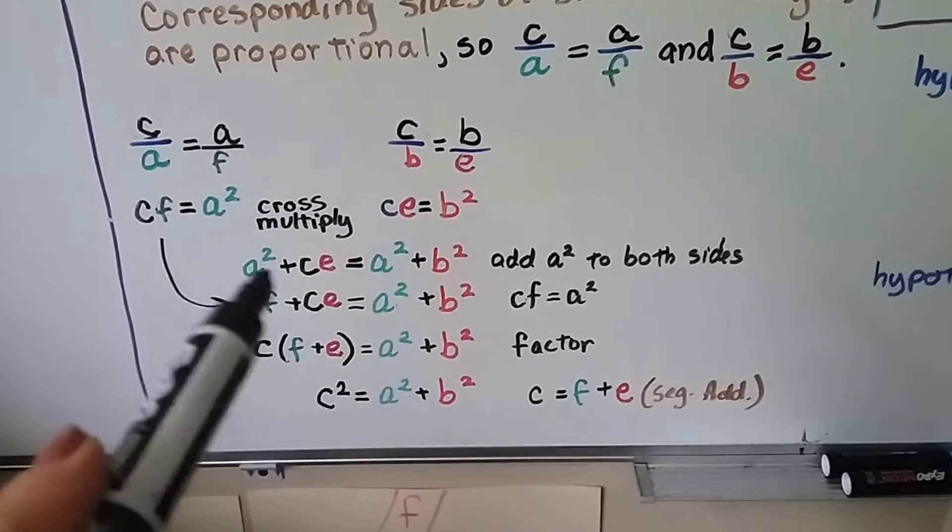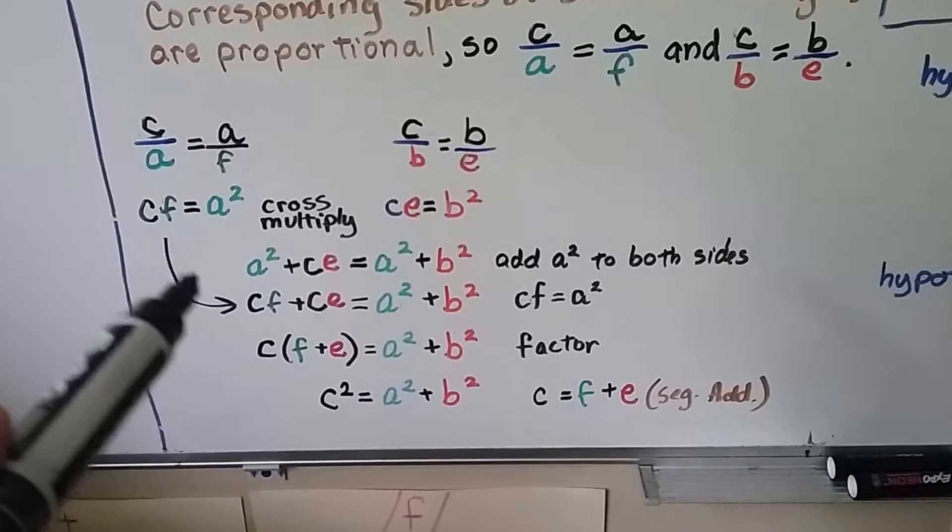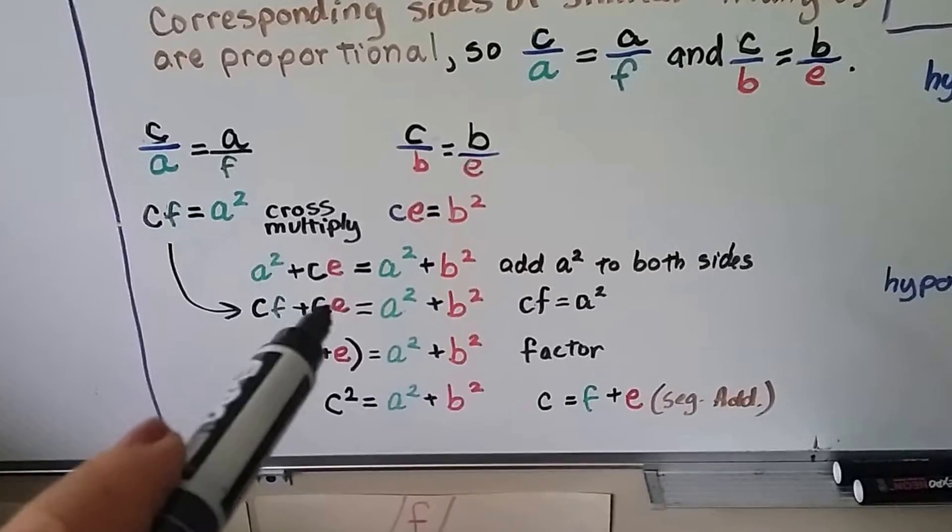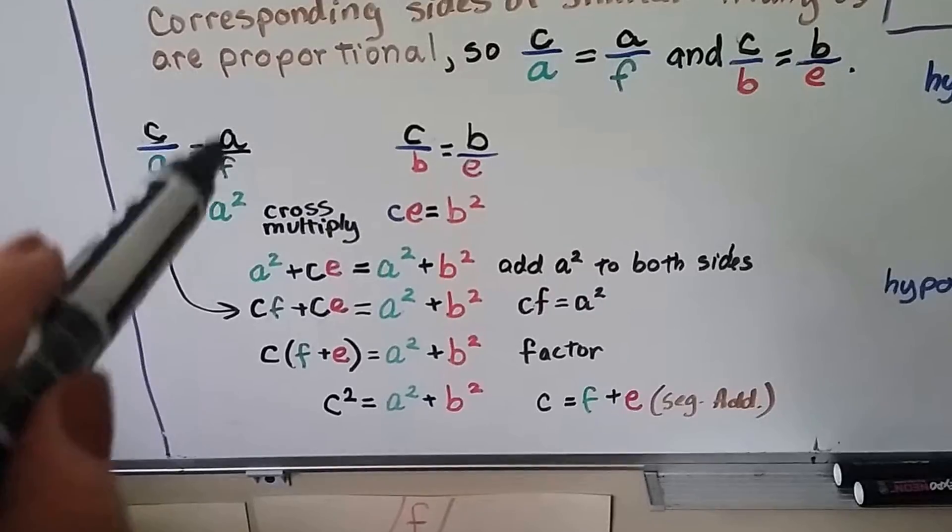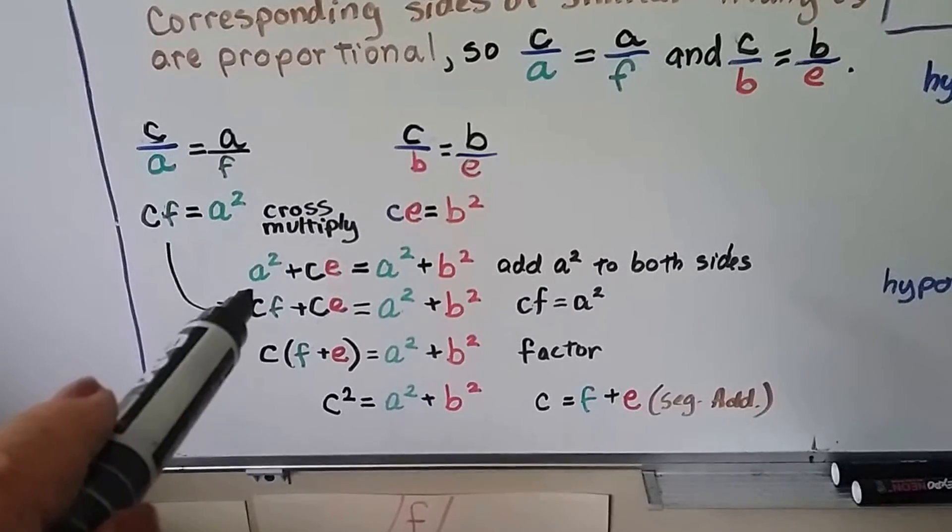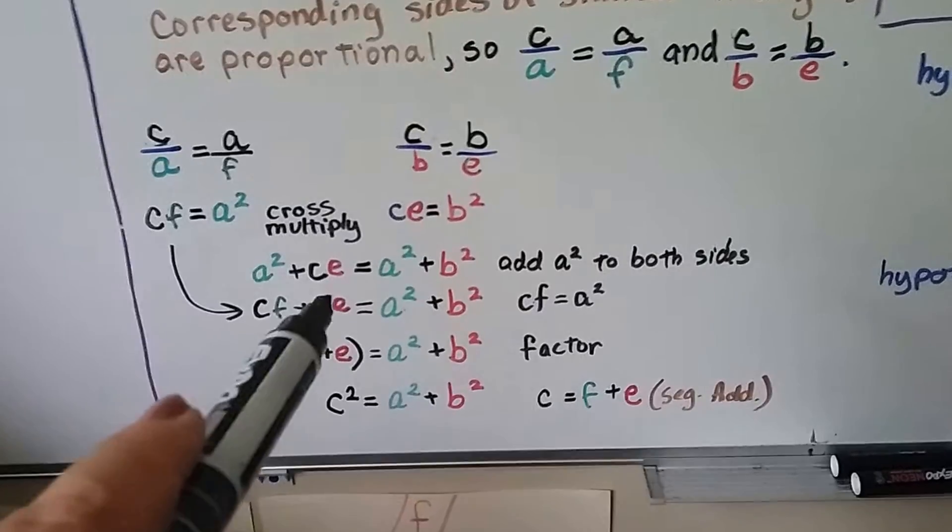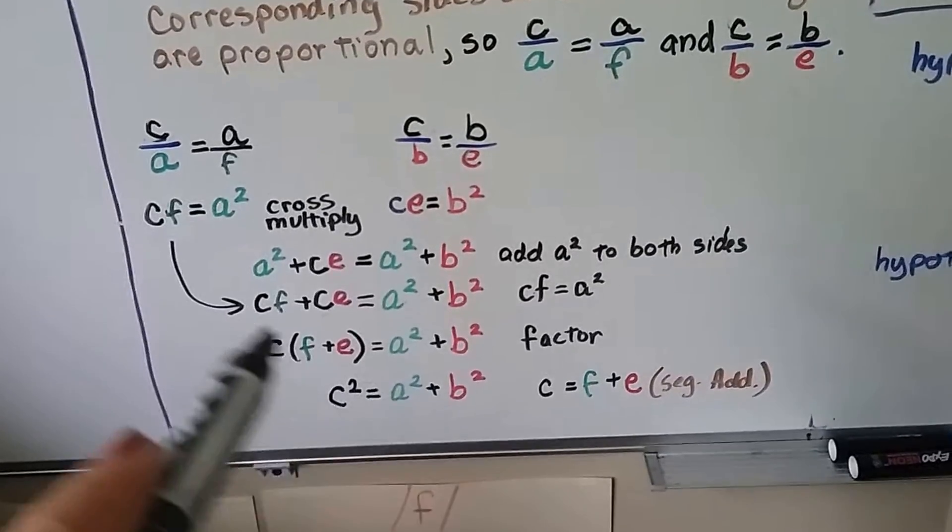Now we have a squared plus CE is equal to a squared plus b squared. Well, we can write CF plus CE here because CF is equal to a squared. We just did that here with the cross multiplication, didn't we? And now we've got CF plus CE is equal to a squared plus b squared, all right?